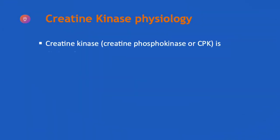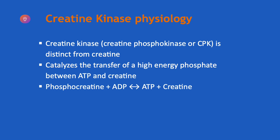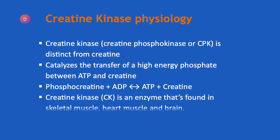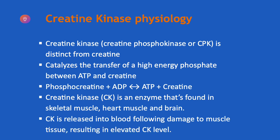Creatine kinase, or CK, is an enzyme that catalyzes the reversible phosphorylation of creatine to phosphocreatine and of ADP to ATP, and as such it is important in regeneration of cellular ATP. It is found in skeletal muscles, heart muscle, and brain, and is released into the blood following damage to muscle tissue, resulting in elevated CK level.